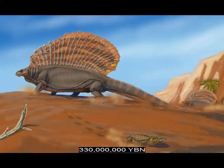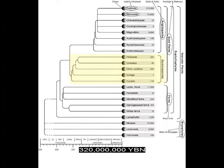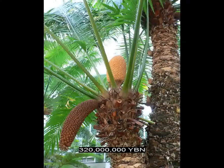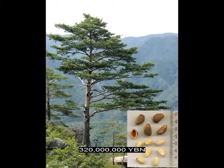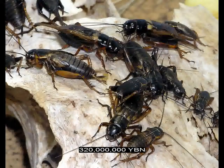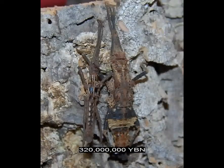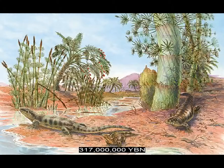The Synapsids Pelycosauria evolve — includes Edaphosaurus and Dimetrodon. Earliest extant amphibians: caecilians evolve. Seed plants gymnosperms — ancestor of all cycads, ginkgos, and conifers. The most primitive extant gymnosperms, the cycads, evolve. The Neoptera Orthoptera evolve — ancestor of crickets, grasshoppers, locusts, and walking sticks. Captorhinid reptiles evolve — ancestor of all turtles, crocodiles, pterosaurs, dinosaurs, and birds.